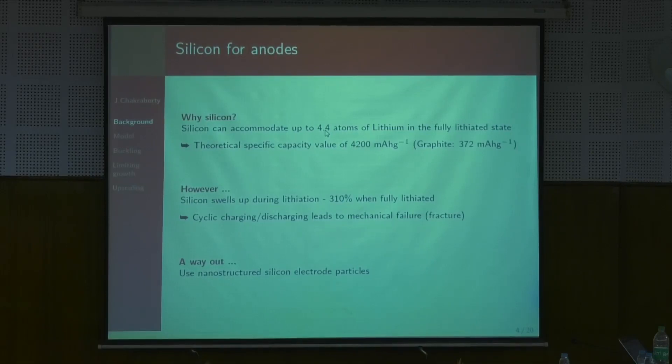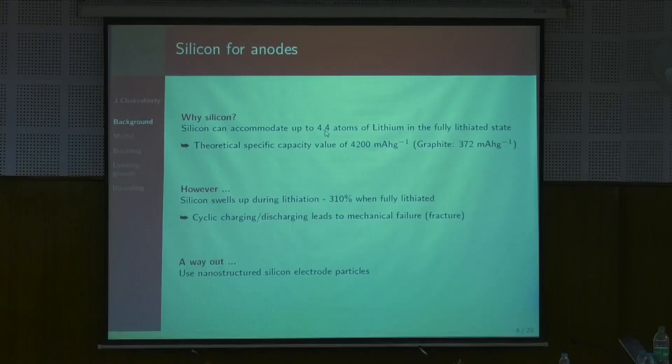So what is the way out? Material scientists and chemists have said we should use nanostructured silicon particles, and it has been seen experimentally that using very small spherical or cylindrical particles mitigates the problem of fracture to a large extent. My question is: suppose we use these nanostructured particles and fracture is no longer observed — is there any possibility of some other kind of mechanical failure?